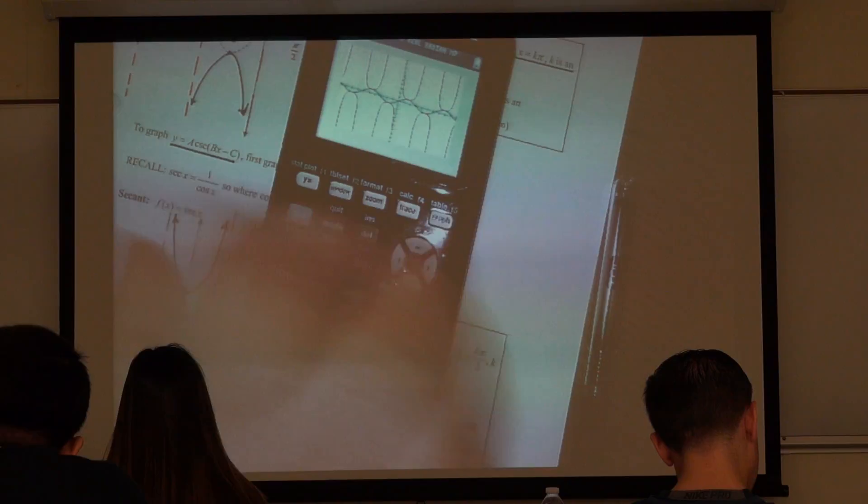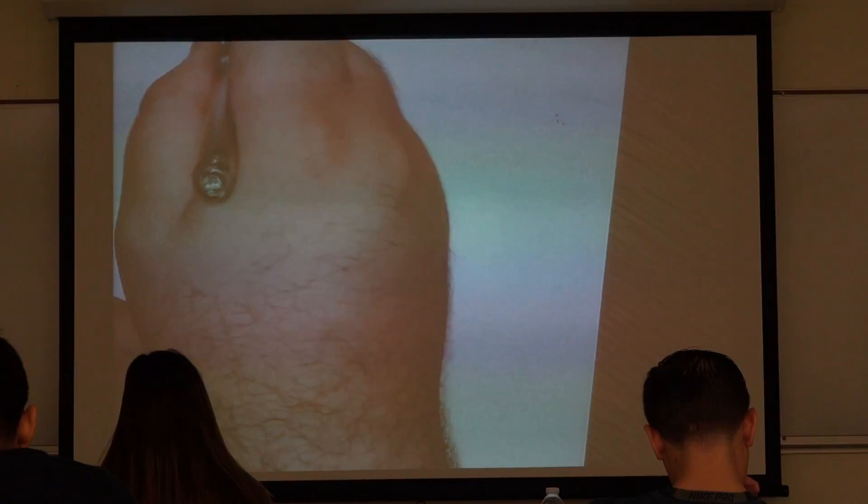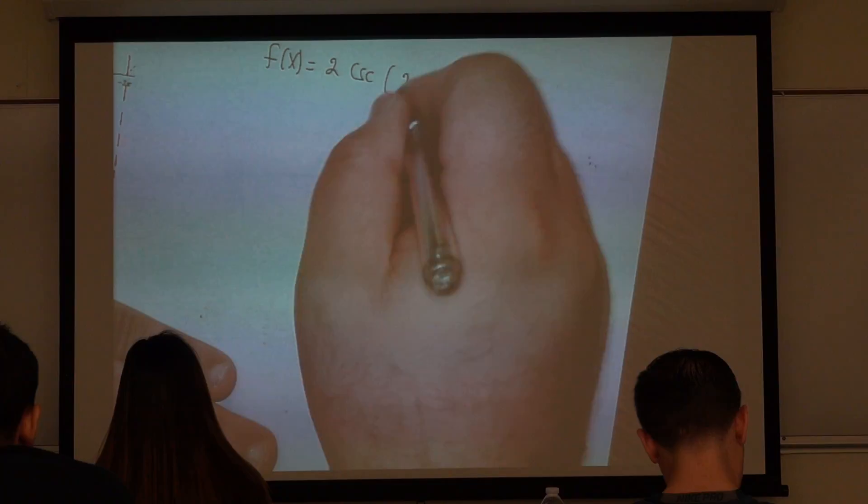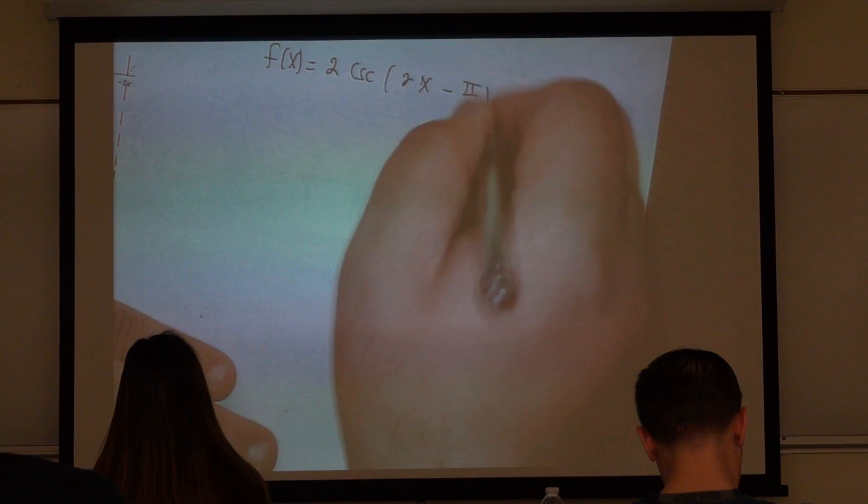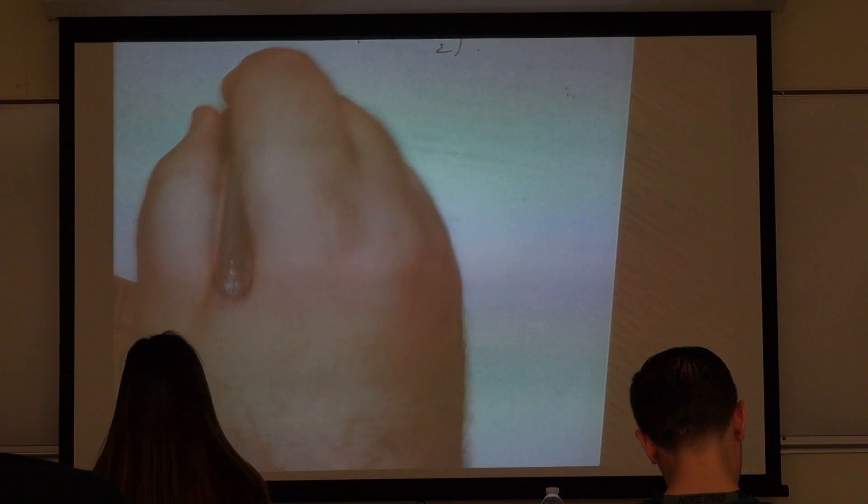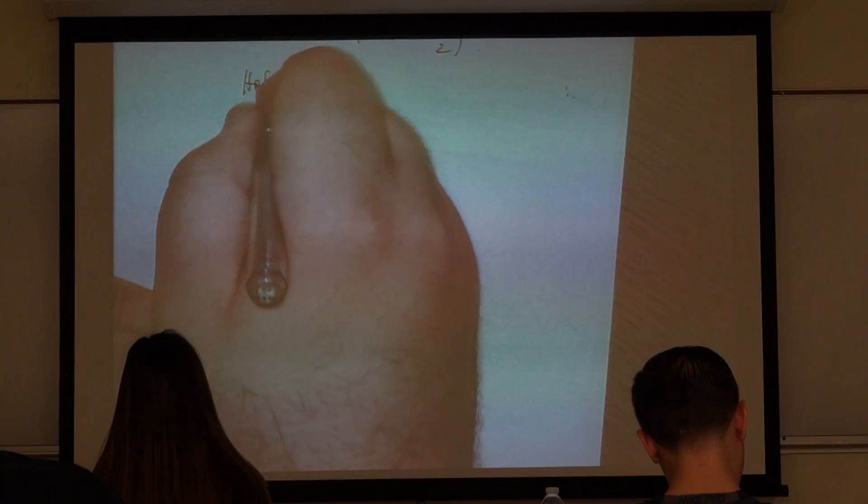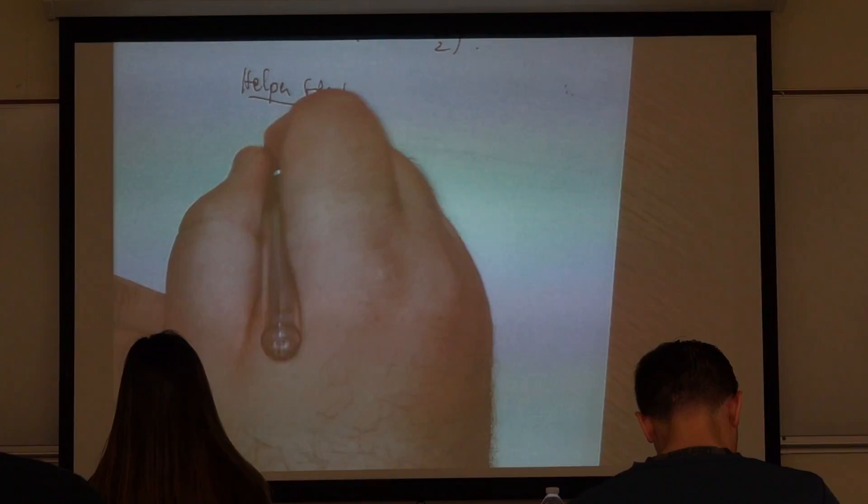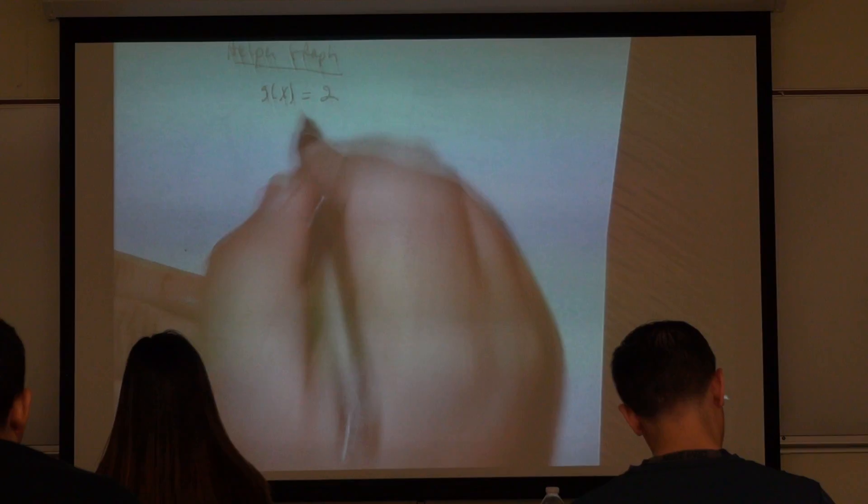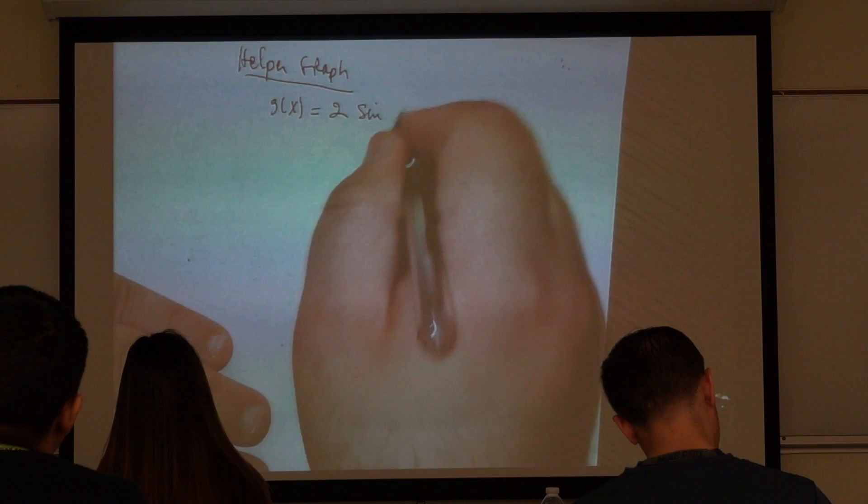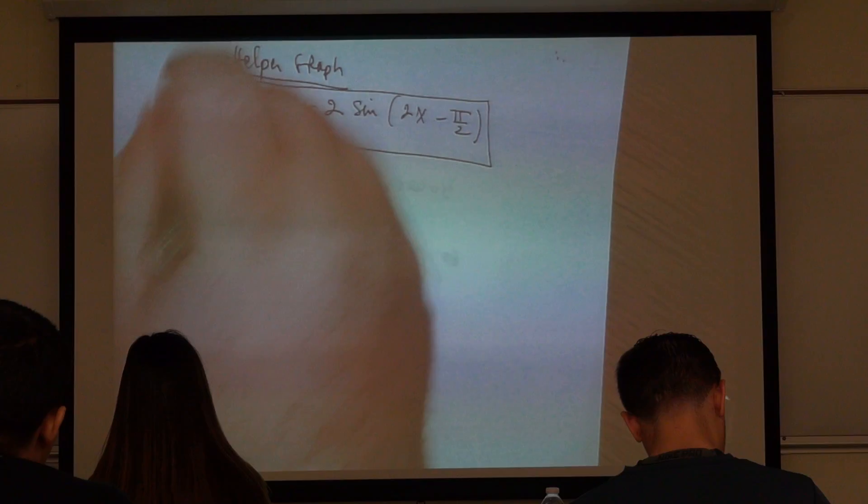If he said, graph f of x equal 2 cosecant 2x minus pi over 2. First you graph this, then to graph what?